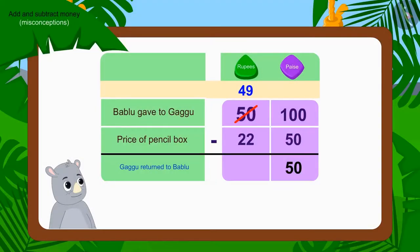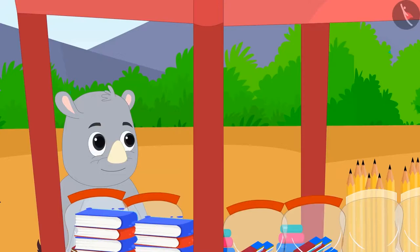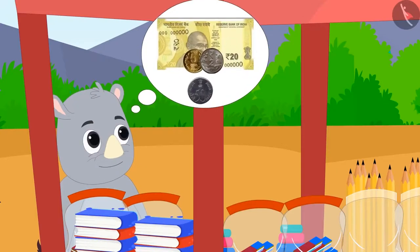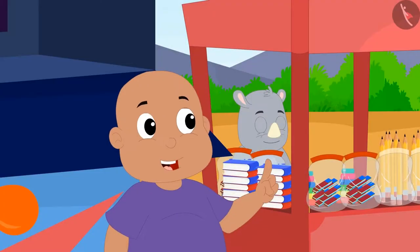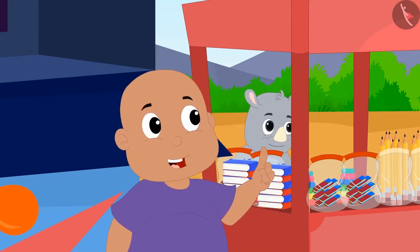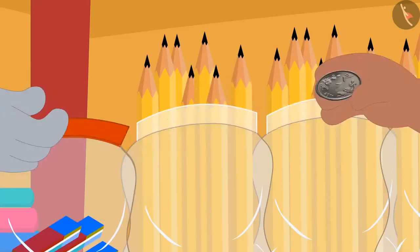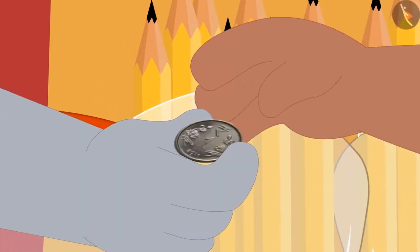Children, can you find the right amount by subtracting the numbers written in rupees? Well done children, you have written the correct answer. Gaggu was to return 27 rupees 50 paise to Bablu. Bablu too quickly did the math like us and found out that Gaggu gave him 1 rupee more. He promptly returned 1 rupee to Gaggu.